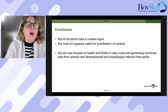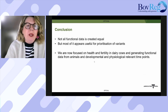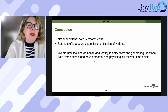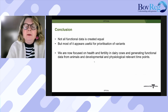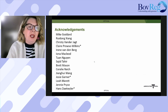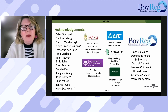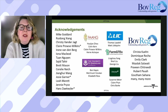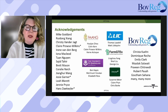In conclusion, not all functional data is created equal, but most of it appears to be useful for prioritisation of variants — and the more, the better. We're now focused on health and fertility, applying this to generate functional data from animals at developmentally and physiologically relevant time points. I acknowledge the Agriculture Victoria team, our collaborators including those at Bovrig — it's been a great collaboration to work with.